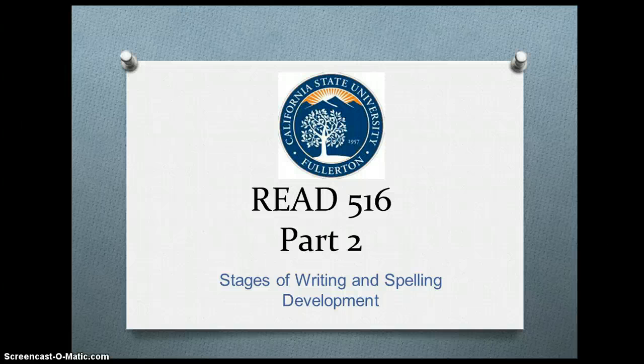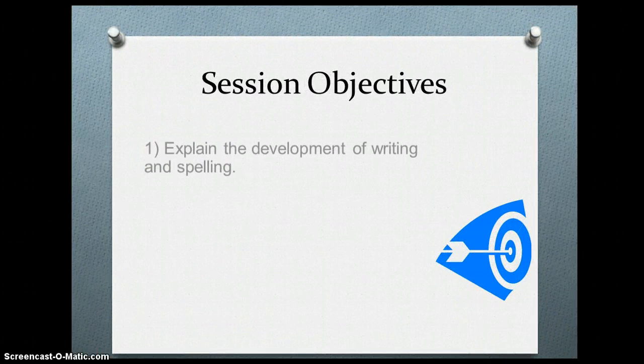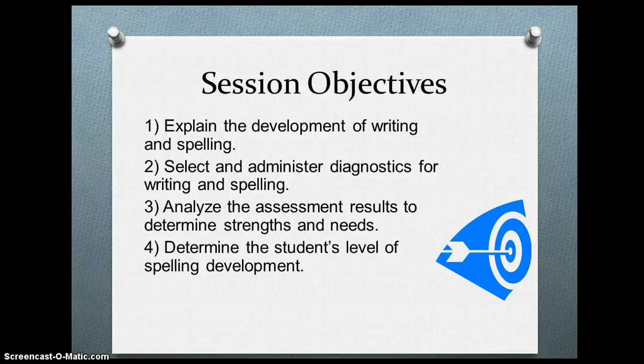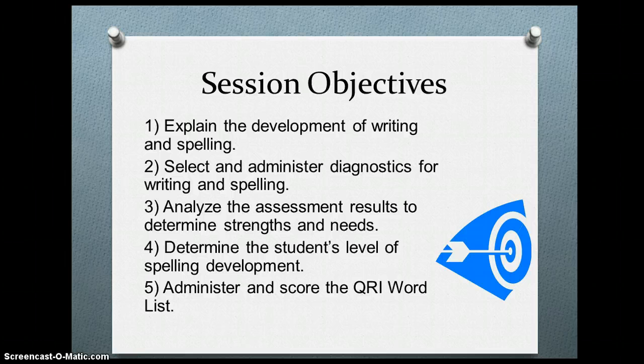You'll recall last week we talked about the stages of word recognition development. Our session objectives for this week are to be able to explain the development of writing and spelling, select and administer diagnostics for writing and spelling, analyze the assessment results to determine strengths and needs, determine the student's level of spelling development, and lastly administer and score the QRI word list, which is another assessment you will be giving this week.